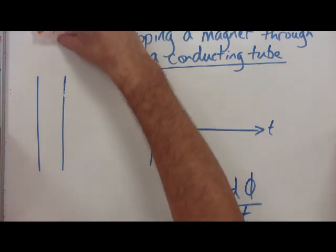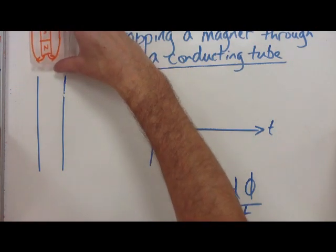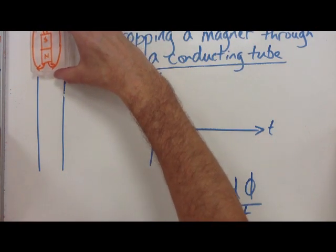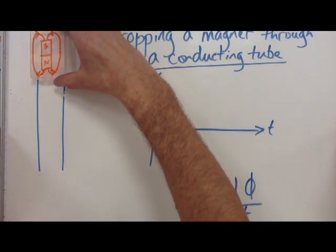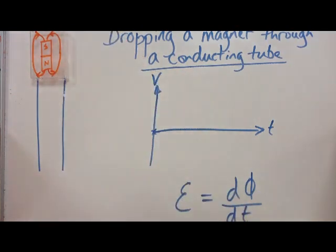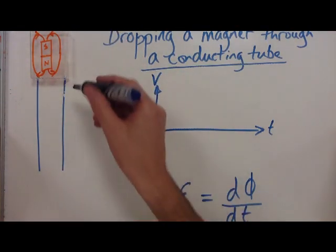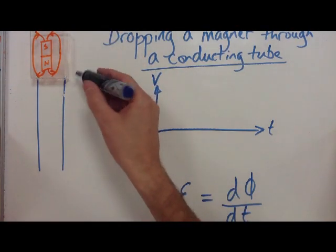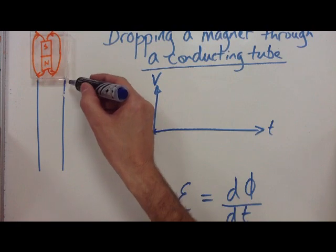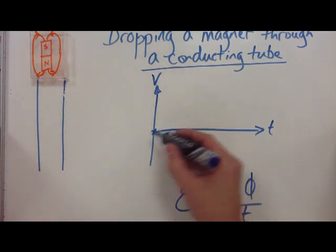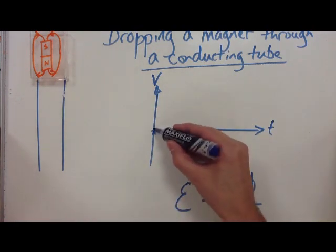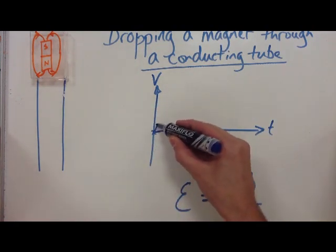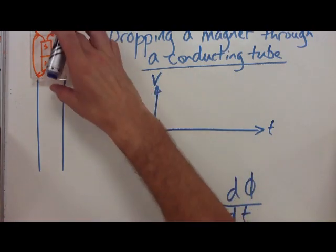It starts to fall, and as it gets closer, field lines are starting to be cut. But there's not many field lines being cut because it's only just getting to the tube, so this value starts to increase.